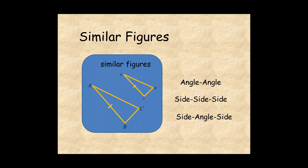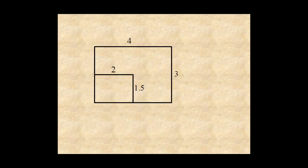This lesson helps you understand similar figures. Similar figures have the same shape, but are not necessarily the same size. If two polygons are similar, then corresponding angles are congruent, and corresponding sides are proportional.